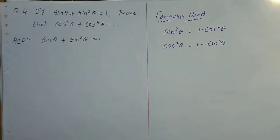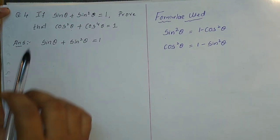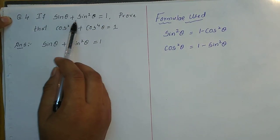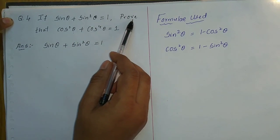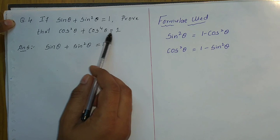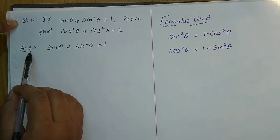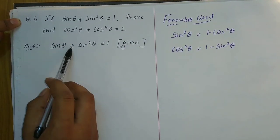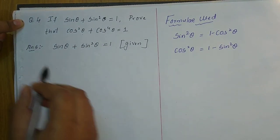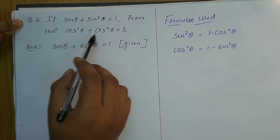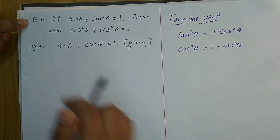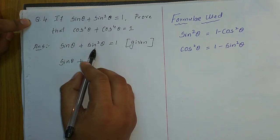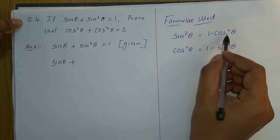Next question — here is the fourth question. If sin θ + sin²θ = 1, then we have to prove that cos²θ + cos⁴θ = 1. So sin θ + sin²θ = 1 is given, and we need to prove cos²θ + cos⁴θ = 1.